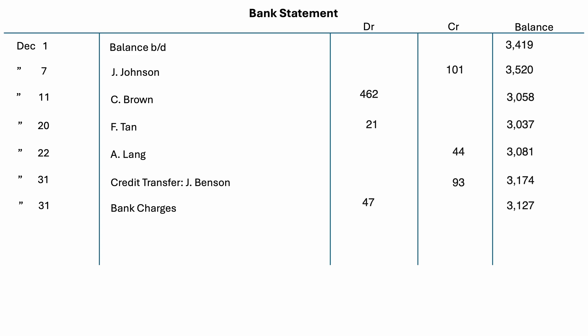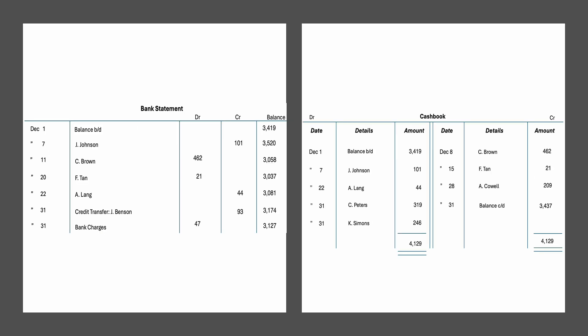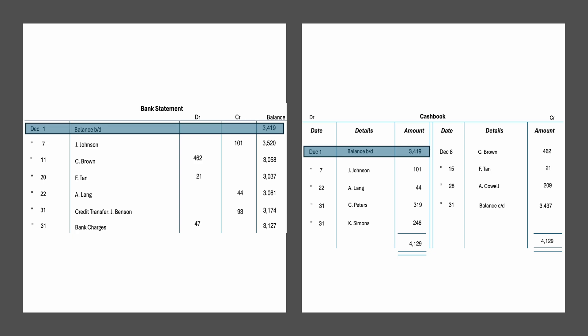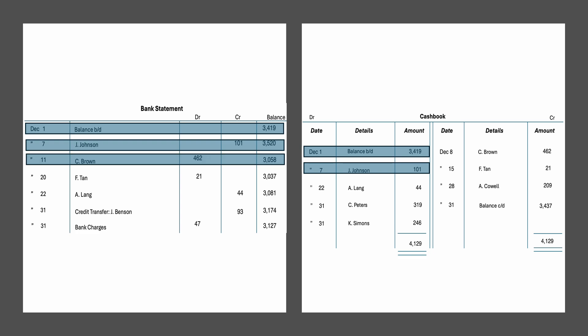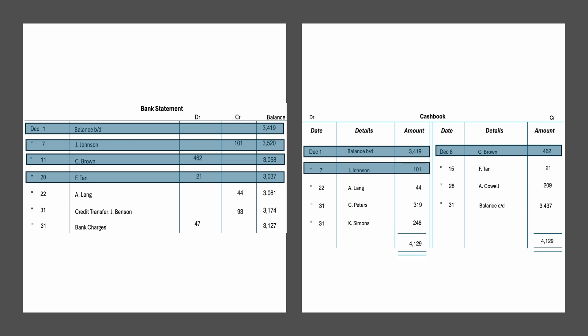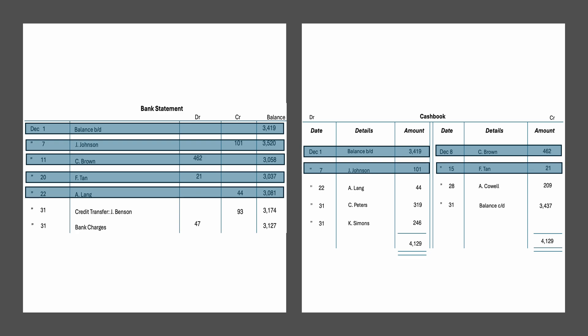The first step is to compare the details on the bank statement and those in the cash book. The balance brought down from the previous month is the same for both. On the bank statement, it shows a payment made by Jay Johnson, and the cash book also shows the same transaction. A check issued to C. Brown and a check to F-10 both appear on the bank statement and on the credit side of the cash book.